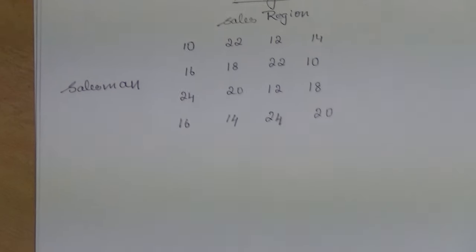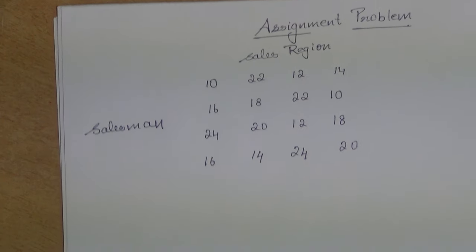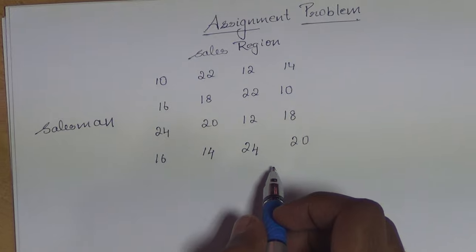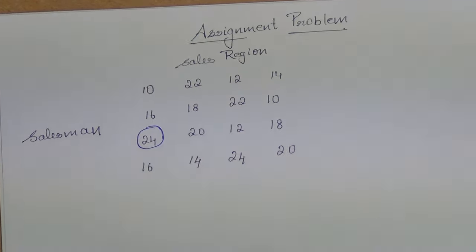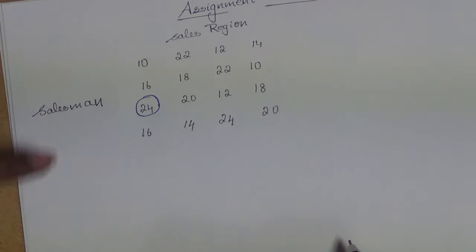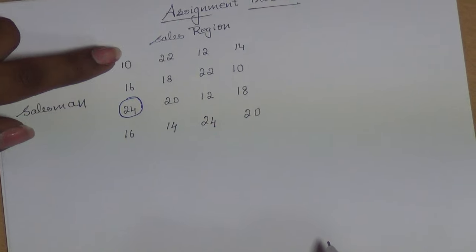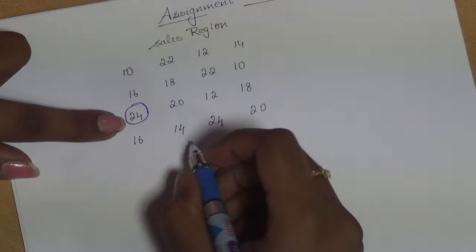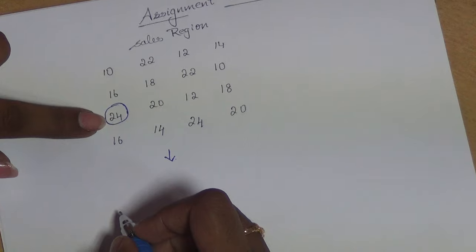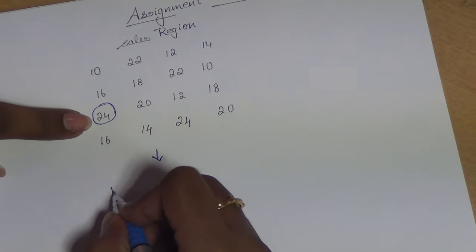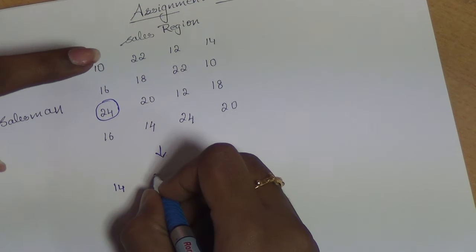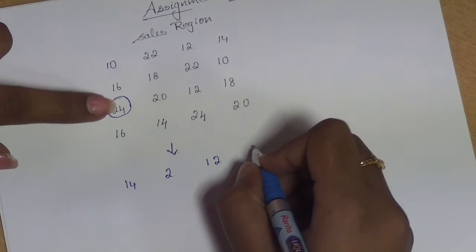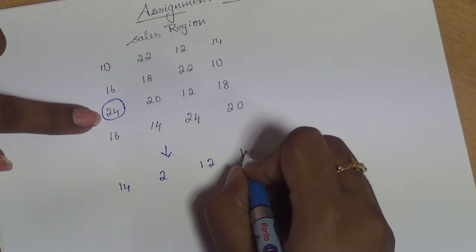first what we have to do is find the maximum value from the total data. The maximum value here is 24. So after getting the maximum value, we have to subtract each value in the data from 24. So 24 minus 10 will be 14, 24 minus 22 will be 2, 24 minus 12 will be 12, and 24 minus 14 will be 10.